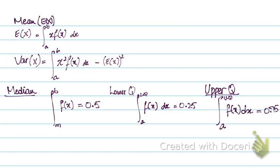You can also integrate f(x) from the upper quartile to the upper limit b and make it 0.25, or integrate from the lower quartile to the upper limit b and make it 0.75. For example, to find the 40th percentile, integrate the function from the lower limit a to an unknown x and set the answer equal to 0.4. For the 90th percentile, integrate from a to x and set it equal to 0.9.